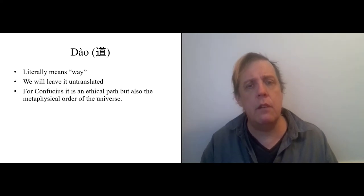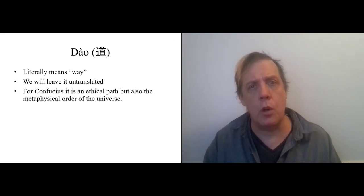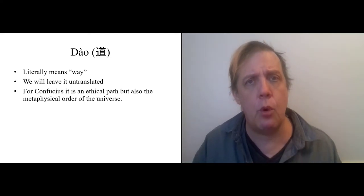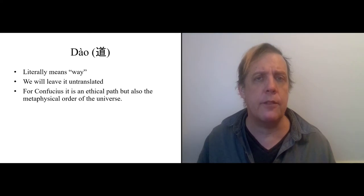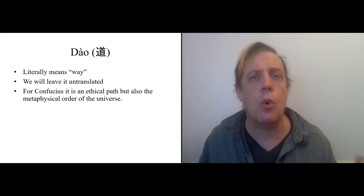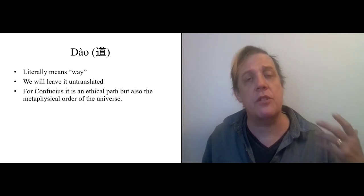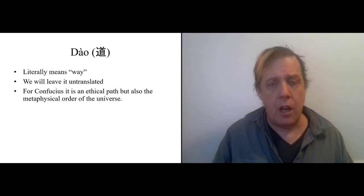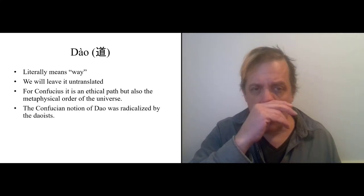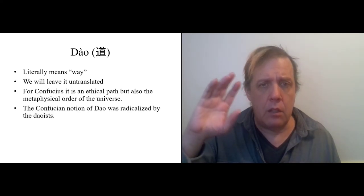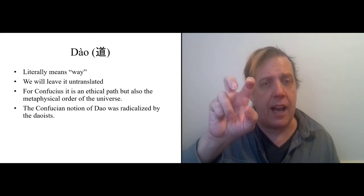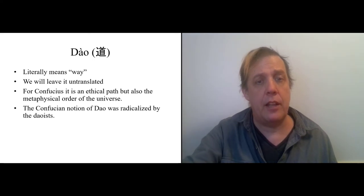Confucius lived in a morally ordered universe. His contemporaries had fallen away from that order, but nevertheless, the universe itself had a moral order which you were supposed to adhere to. That was the moral order, that was the Tao of heaven. Later, a later school called the Taoists are going to grab this Confucian notion of Tao and radicalize it. We'll also talk about that later.